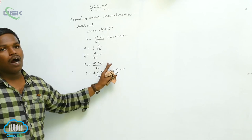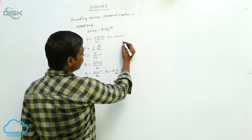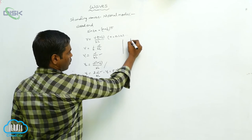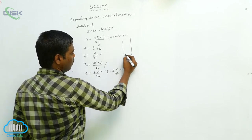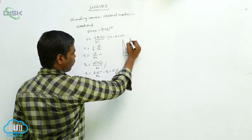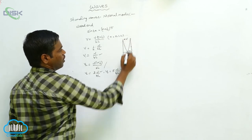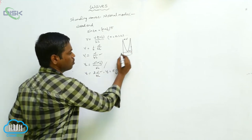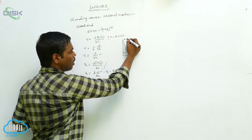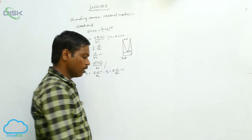For the closed end we get only odd multiples of the normal modes; the remaining modes vanish. In this vessel, I am taking some water filled up to a level, and we get standing waves where the node forms at the closed end — where the water is touching — and the antinode forms at the other side. This is the first harmonic.